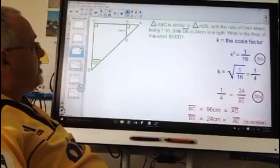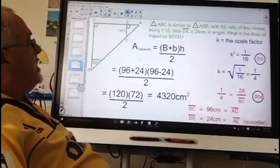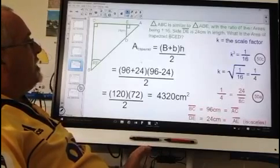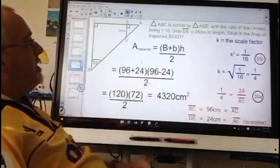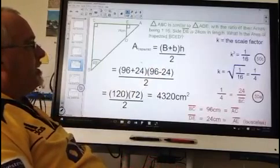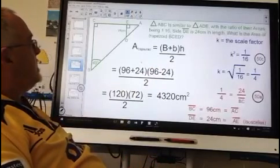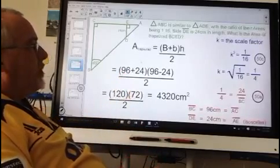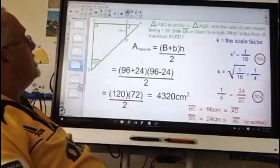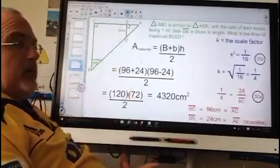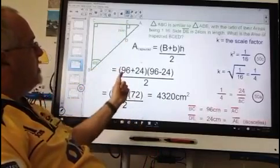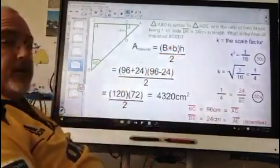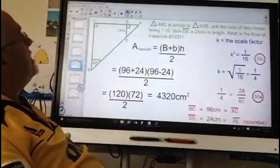Now we have to finish off the problem. We have to find the area of the trapezoid. There are more than one method for doing this. I am going to show the method first that is using the area of a trapezoid formula, which is given right here. For this we need big B, which is the large base of the trapezoid. That is side BC. We found that it is 96 cm. To that we have to add little b, which is the short base of the trapezoid. That is side DE, which was given 24 cm. Here is where we are adding them in the first bracket.